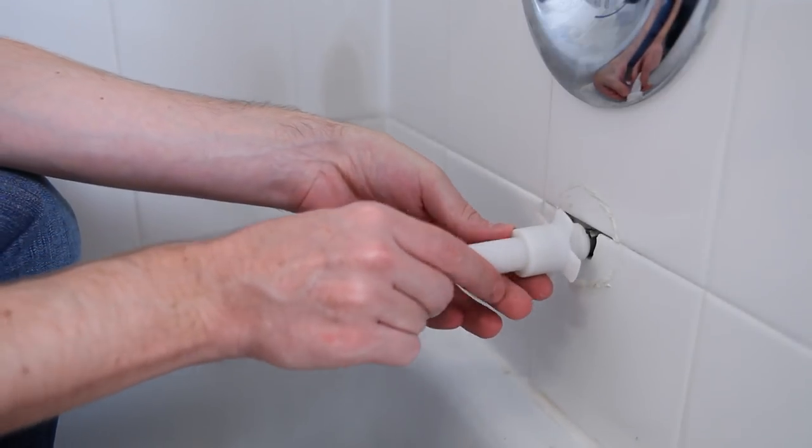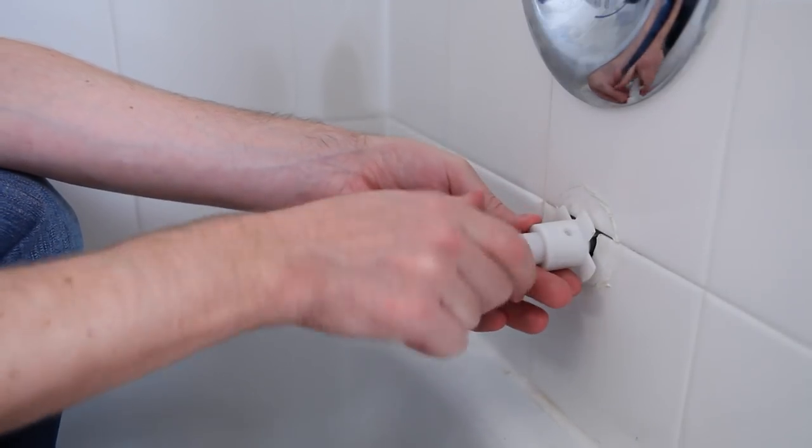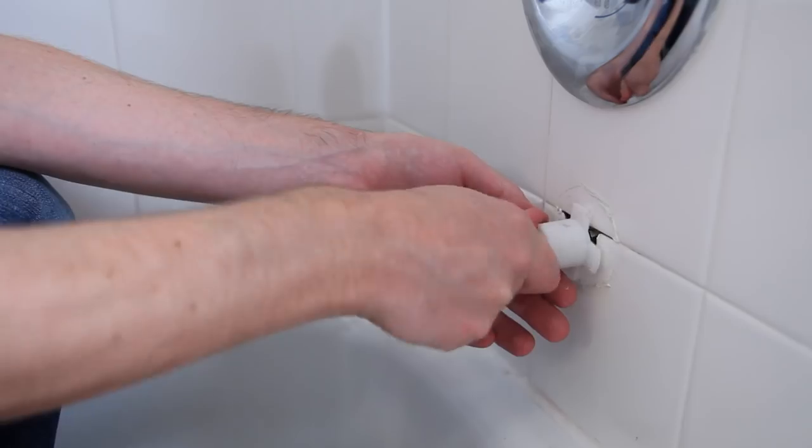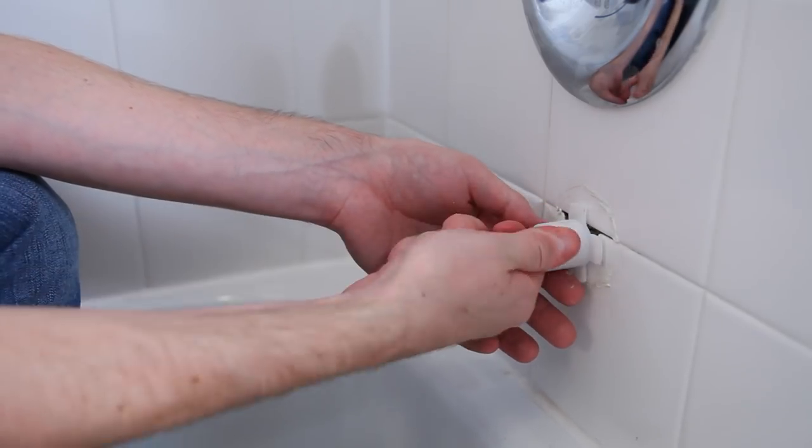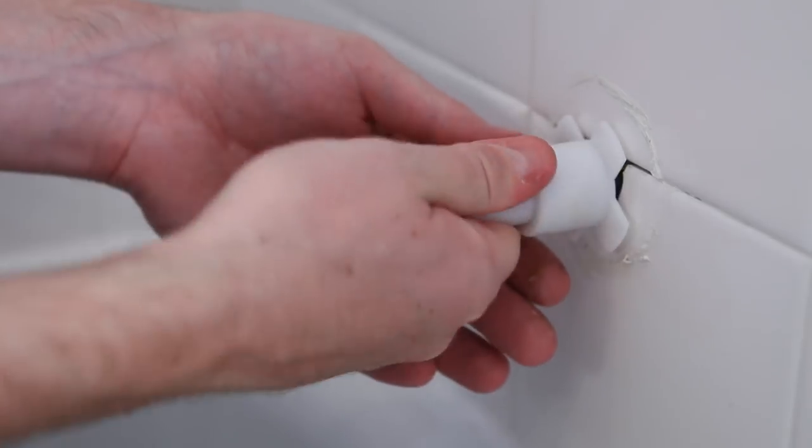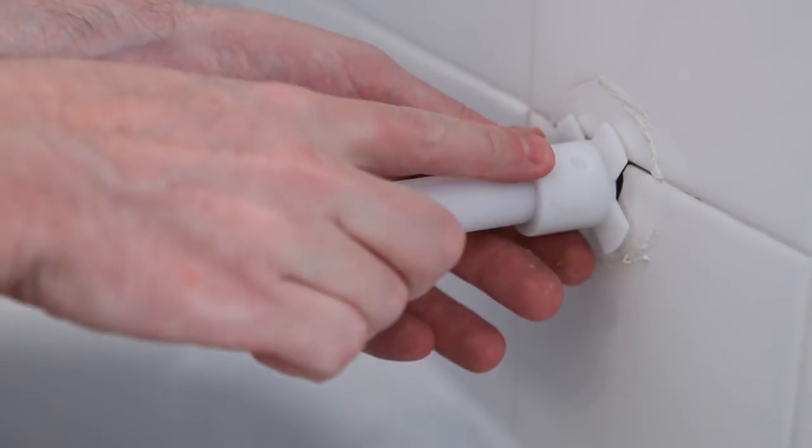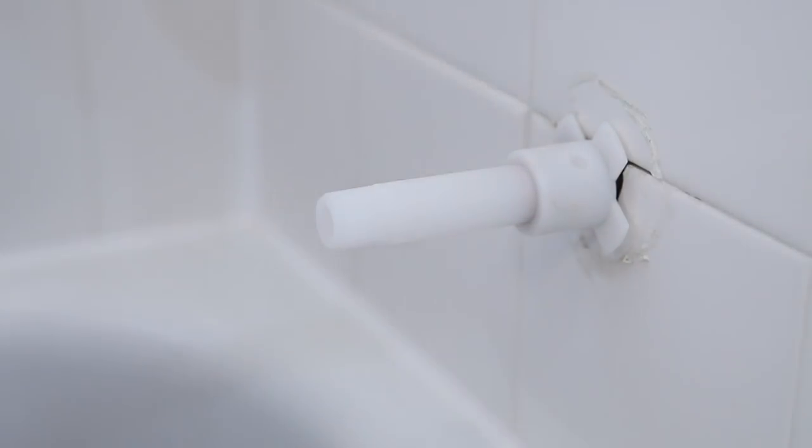Slide the extension nipple onto the stub out nipple and thread it onto the adapter, aligning the hole in the extension nipple with the slot in the adapter. Turning clockwise, tighten the extension nipple onto the adapter until the adapter aligns with the hole in the extension nipple.